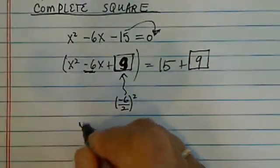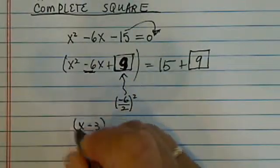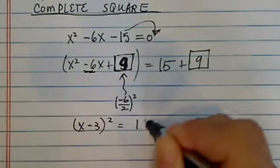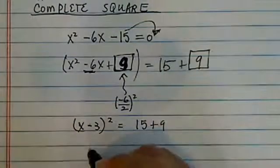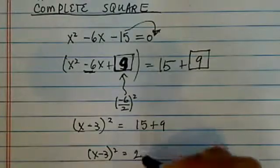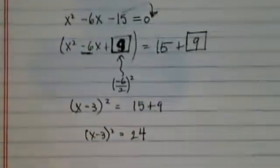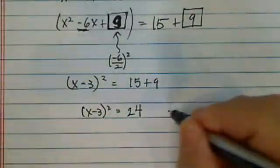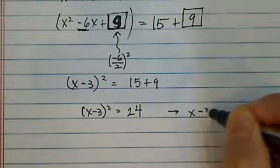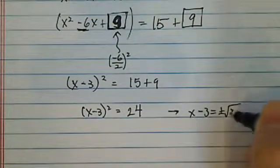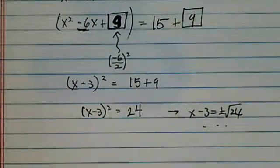Okay, this is a 9. So I have x minus 3 squared is equal to 15 plus 9, or x minus 3 squared is equal to 24. Okay, so this is completing the square. From here if you want to solve it, you can say x minus 3 is equal to plus minus square root of 24, and so on and so forth. So you can solve it from there.